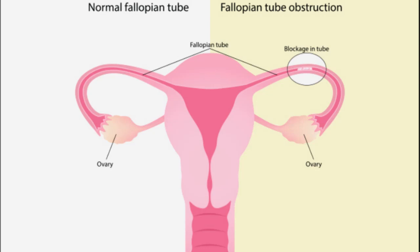Secondary infertility refers to the inability to conceive a child after previously having been able to conceive. This can be caused by a number of factors, including age, changes in the reproductive system, and certain medical conditions. As a woman ages, her fertility declines and the chances of conceiving decrease.